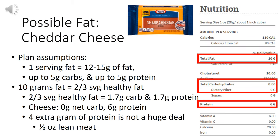What about using cheese as your healthy fat option? Looking at this brick of sharp cheddar cheese: one ounce has 10 grams of fat, which is roughly two-thirds of a serving of healthy fat. That means per serving we could have 1.7 grams of carbs and 1.7 grams of protein. There are no carbohydrates in this particular cheese — totally cool. There is six grams of protein, and the extra four grams is not a huge deal unless you're on a very strict diet, in which case you'd count it as half an ounce of lean meat. So yes, you can have cheddar cheese or any kind of cheese as your healthy fat source, though I will caution that cheese is very high in saturated fat, so you don't want it as your fat source for every meal — once or twice throughout the day is totally fine.